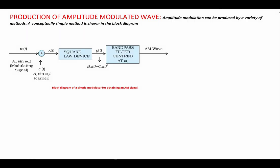Today we will be doing production of amplitude modulated wave for three marks. Amplitude modulation can be produced by a variety of methods. Conceptually a simple method is used as shown in the block diagram.